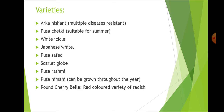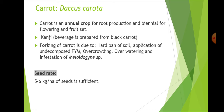The next important crop is carrot. The botanical name is Daucus carota. It is an annual crop for root production and biennial for flowering or fruit set, because for root production only one season is needed, but for flowering and fruit set we take it through two seasons — roots are produced in one season and we wait for bolting in the next season for the seeds to set.